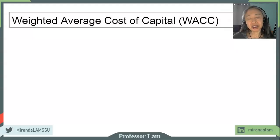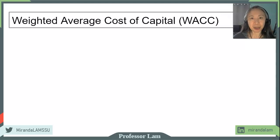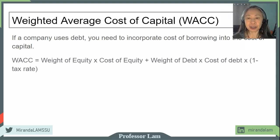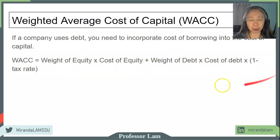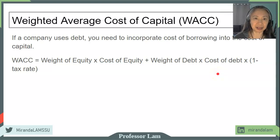If a company uses debt in its capital structure, we may also need to compute the weighted average cost of capital. The steps for computing the weighted average cost of capital for a private firm are the same as for a public firm — the only difference is that the cost of equity used must follow the steps we just described. The weighted average cost of capital is computed as the weight of equity times the cost of equity, plus the weight of debt times the cost of debt times (1 minus the tax rate), because interest on debt is tax deductible. For a private firm, the cost of debt will be a bank loan or a line of credit.